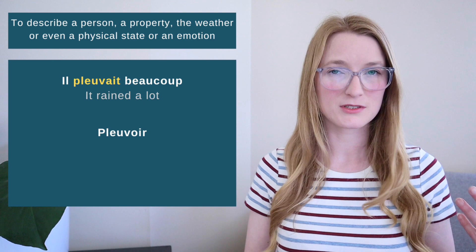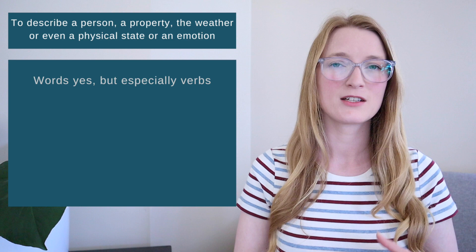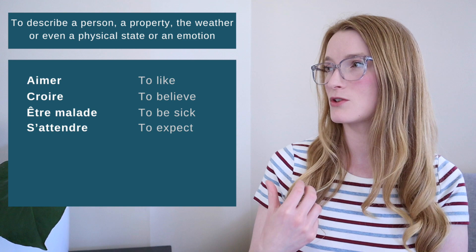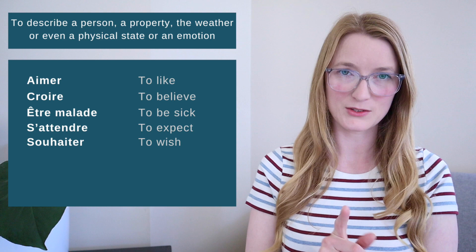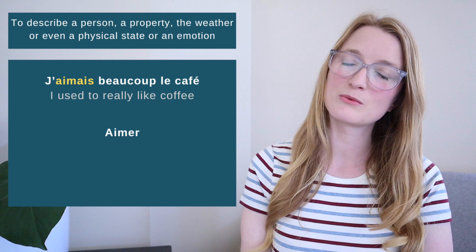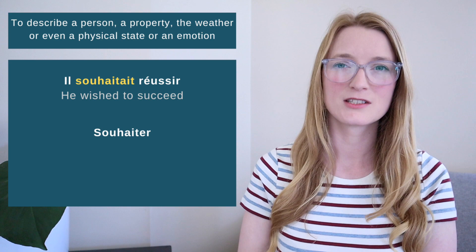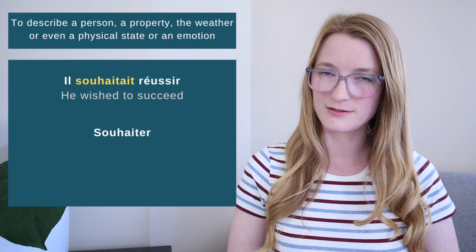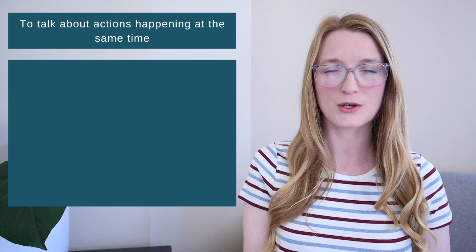To express emotions and physical states, we also use specific verbs with the imparfait, such as: 'aimer' (to like), 'croire' (to believe), 'être malade' (to be sick), 's'attendre' (to expect), and 'souhaiter' (to wish) — with more examples in the book. For instance: 'J'aimais beaucoup le café' and 'Il souhaitait réussir' — he wished to succeed. When you want to describe someone or something in the past, you generally use the imparfait. When you're done, do exercise 3.7.